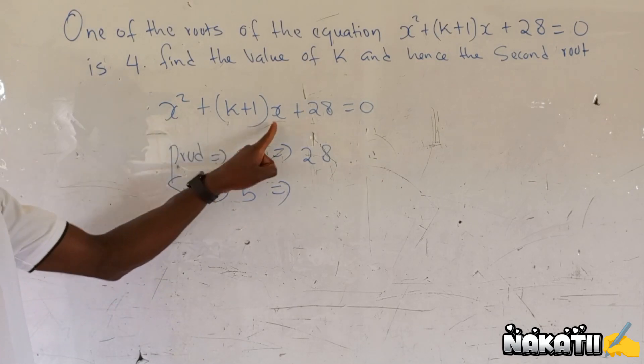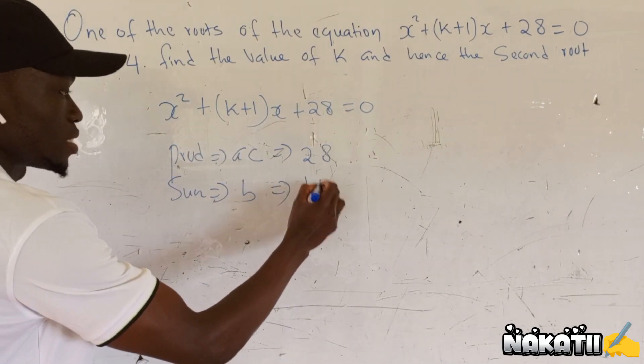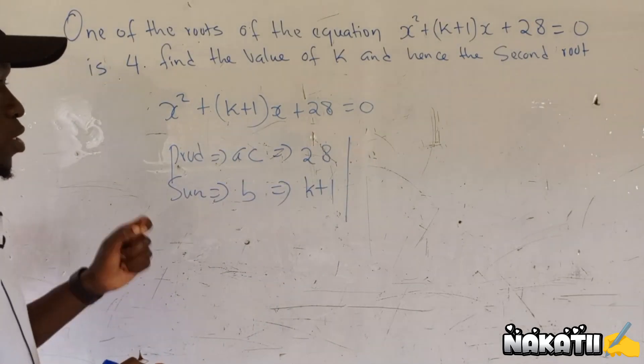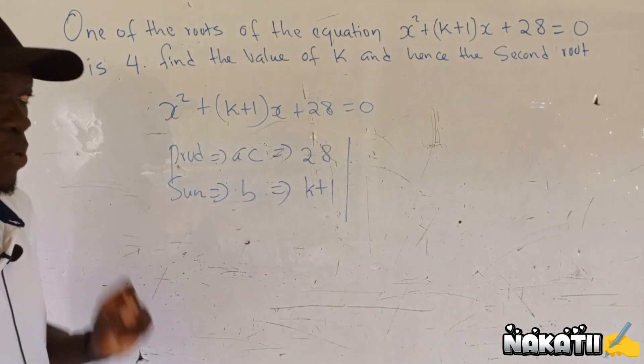Our sum will be the coefficient of x. In our case, the coefficient of x is k plus 1. So we look for two numbers that when you multiply them we are supposed to get 28, and when you add them we are supposed to get k plus 1.